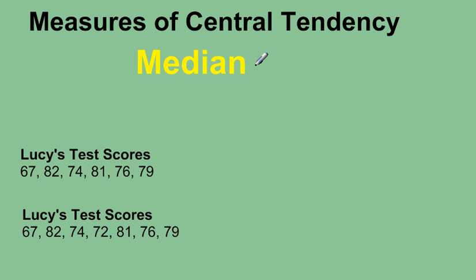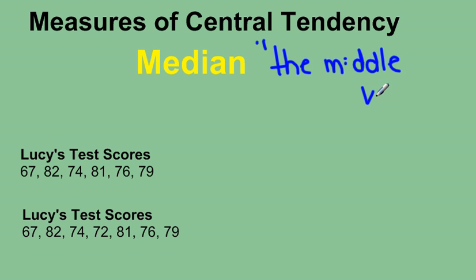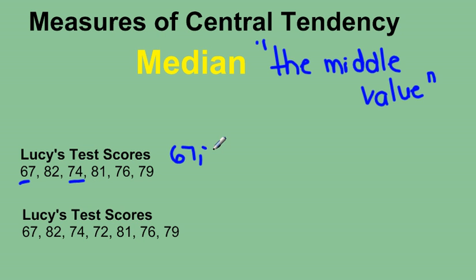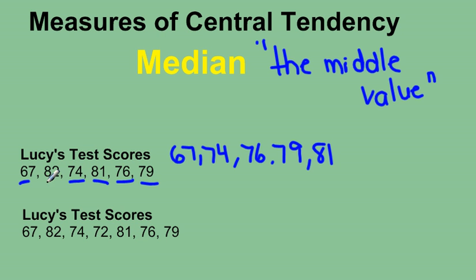If I'm trying to find the median, we can consider this as the middle value. One thing you must remember when finding the median is to rearrange the values from smallest to largest. We're looking at Lucy's test scores. The smallest is 67, then 74, 76, 79, 81, and 82.